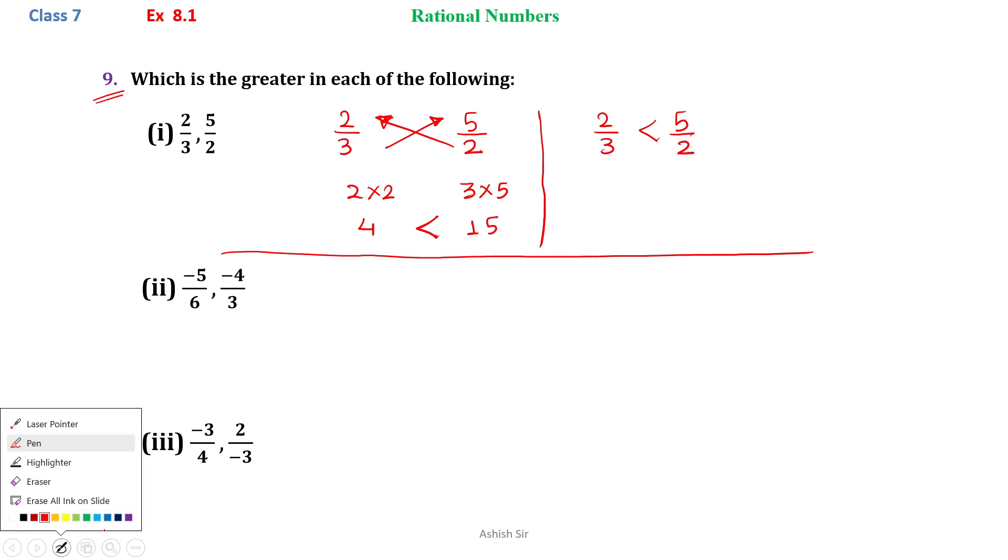Moving on to the next part: is minus 5 by 6 greater or minus 4 by 3 greater? We can directly use the cross multiplication method. We get minus 5 into 3 and minus 4 into 6.